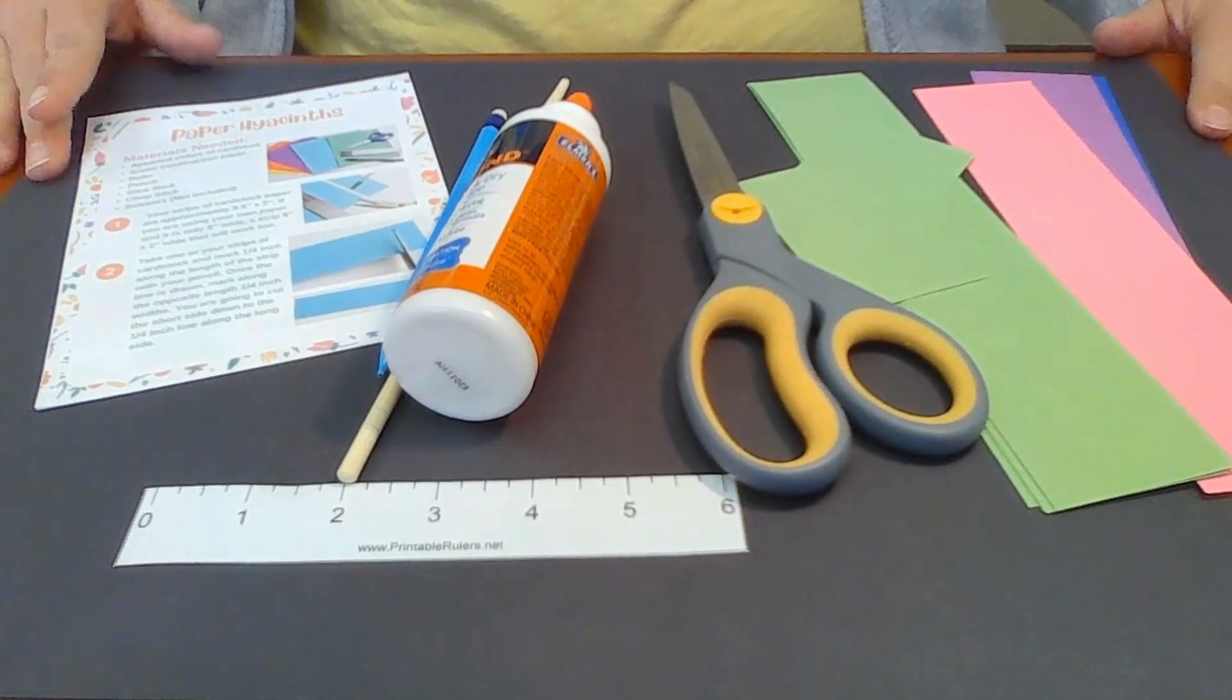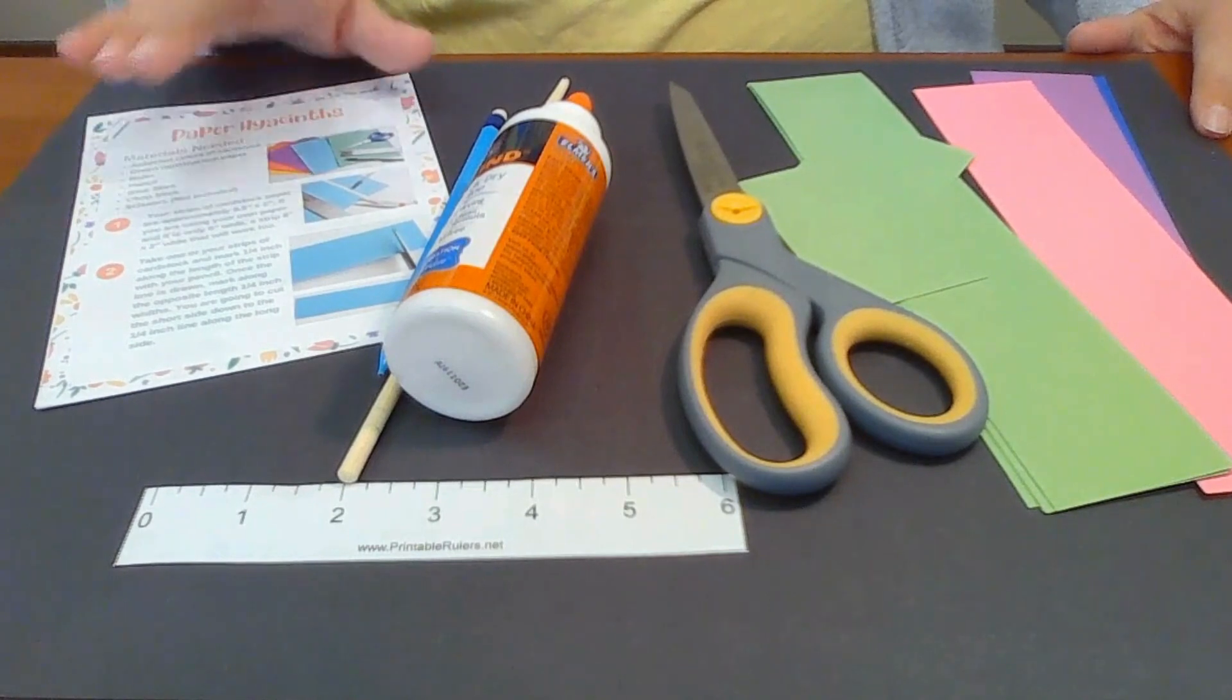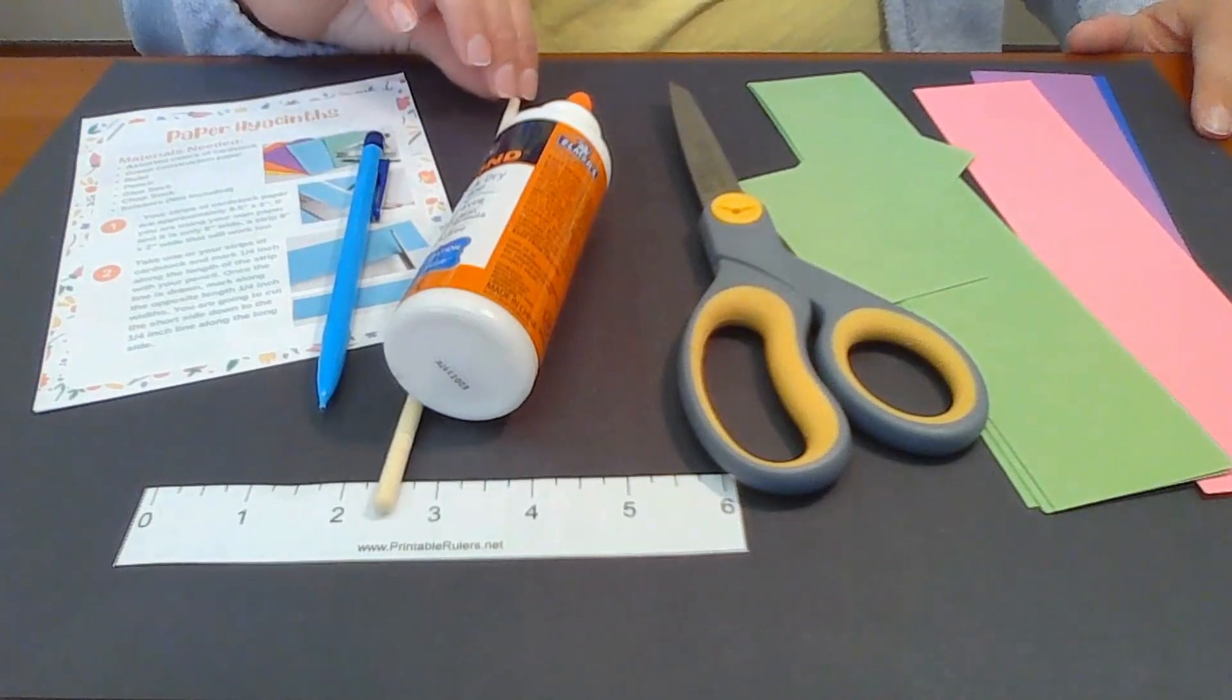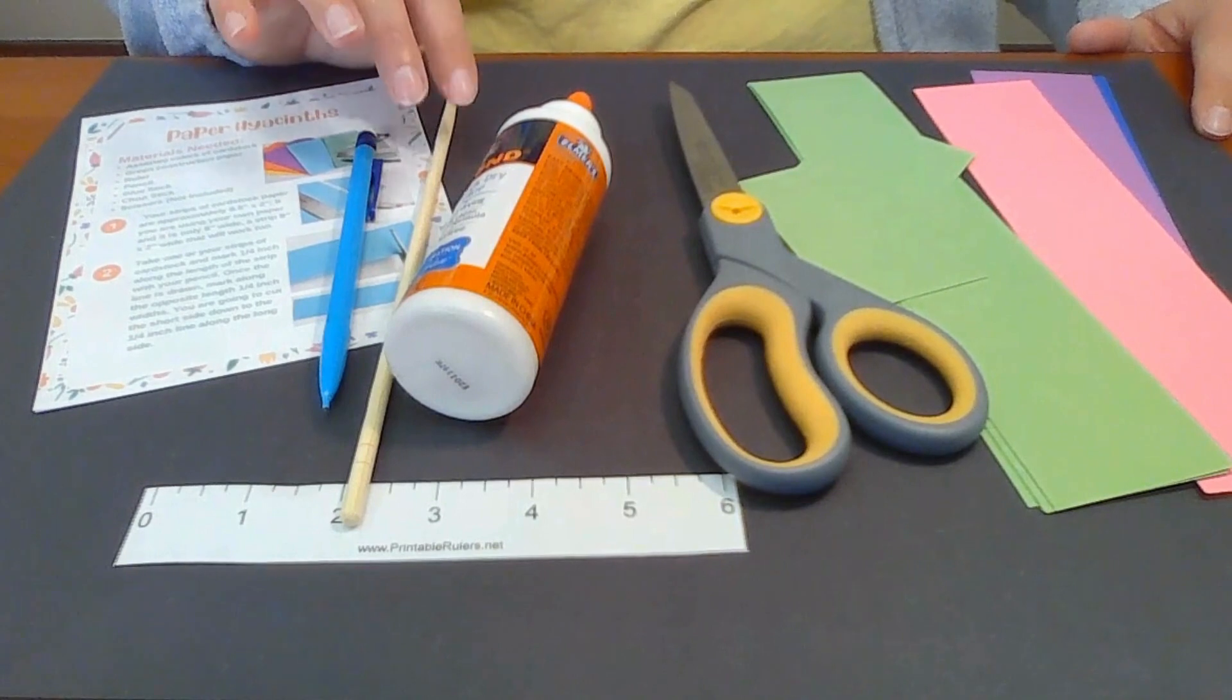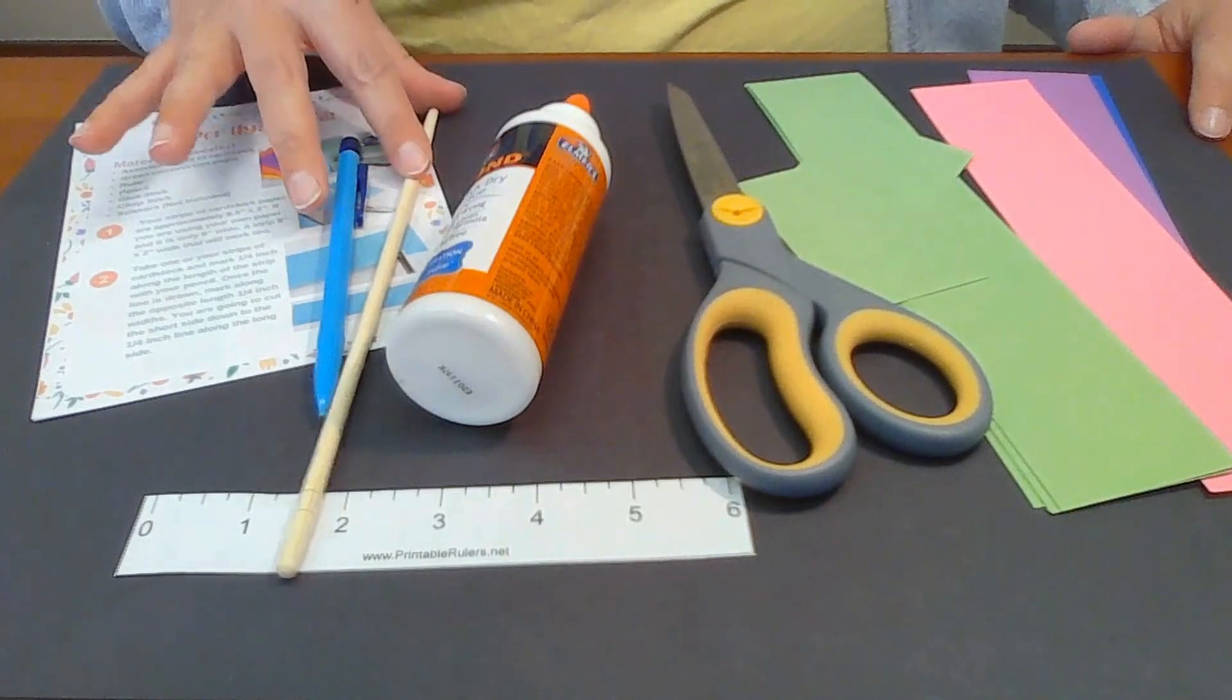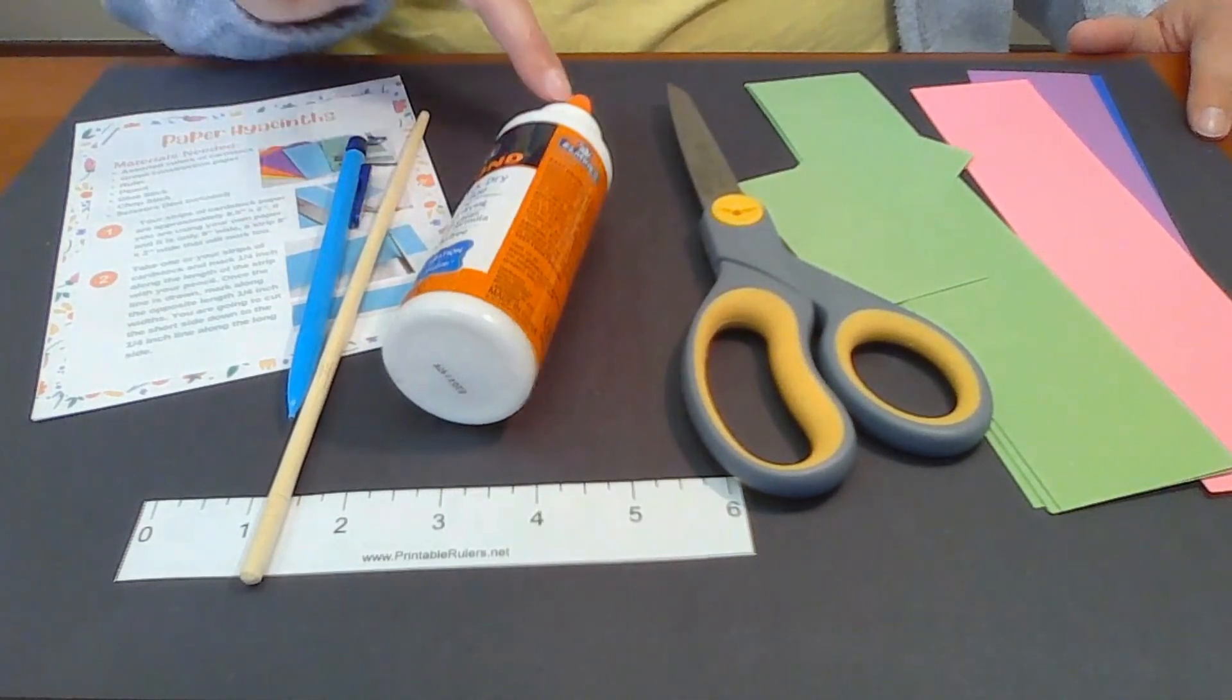So what we need to make our paper hyacinths are first some instructions. If you did not get your arts and crafts tote, you do not have these, but you can watch this video and learn how to do it. A pencil. I have a wooden dowel, but anything slender and round, even your pencil would work. It's just a little bit thick. If you can avoid using that, it'd be perfect. Or the end of a paintbrush, something like that. This is a chopstick.